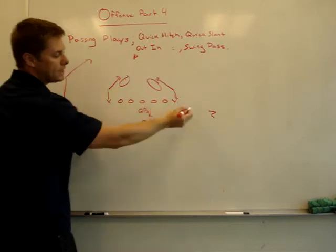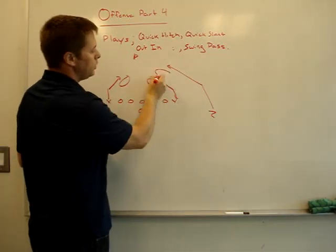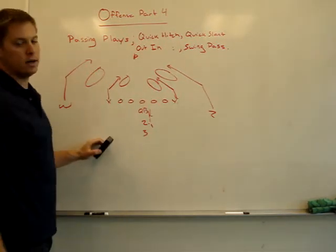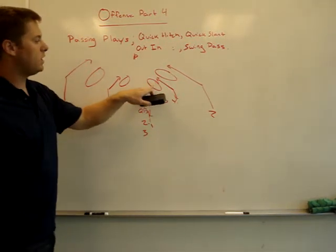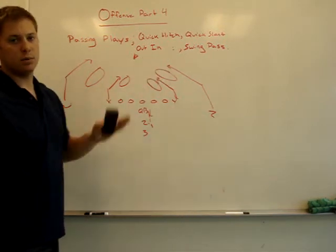then they throw to their secondary read, which is the W or the Z. So you have a bubble there and you have a bubble there as well. So if that's up there, you have to train them to see that right away and then throw over the head to this person here.